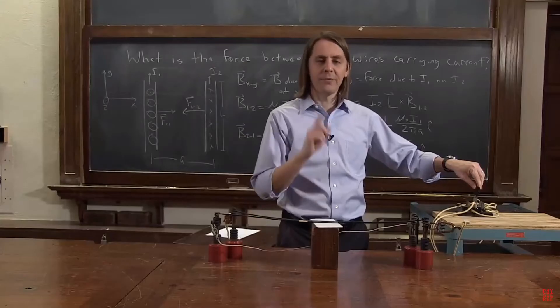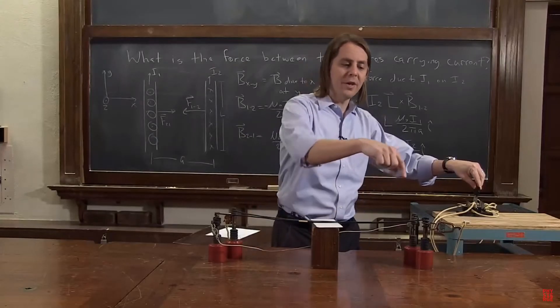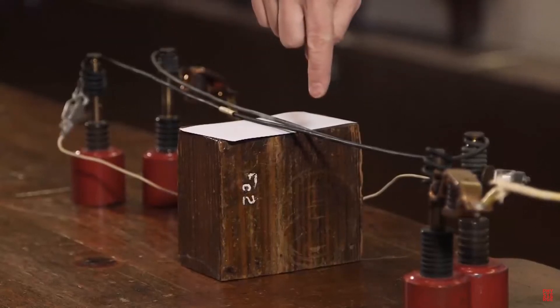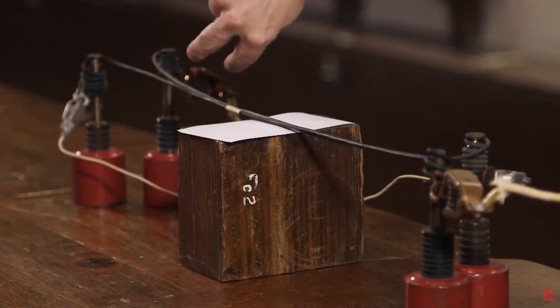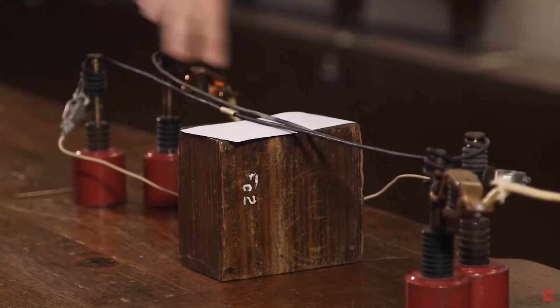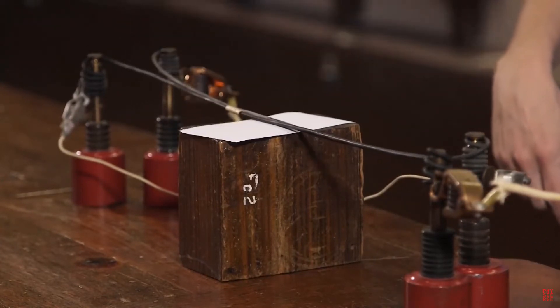Now I can flip the switch the other way. Instead of the current going this way, the current goes this way, but it also goes this way in both wires. So basically the current can both go this way and it's attractive, or the current can both go this way and it's attractive.